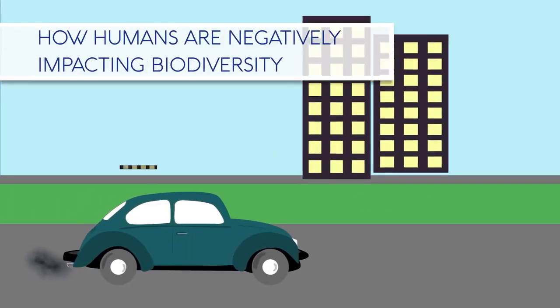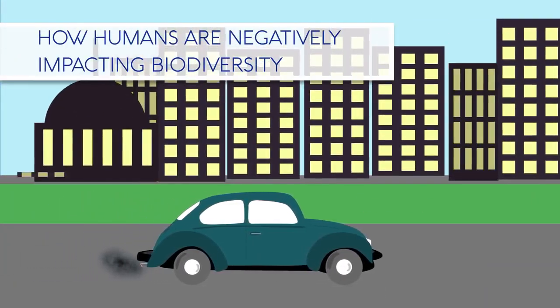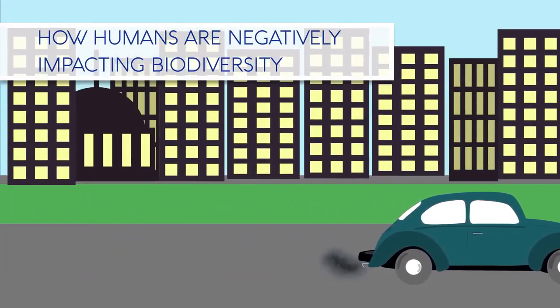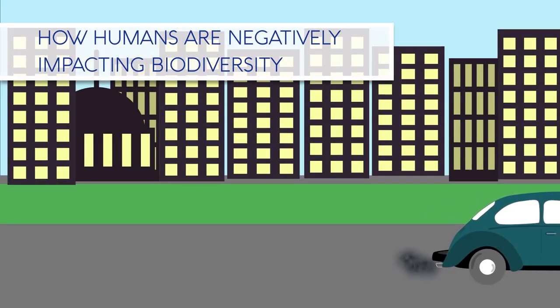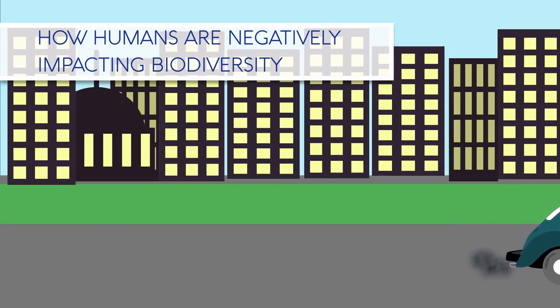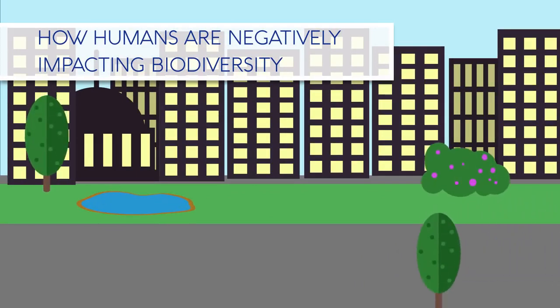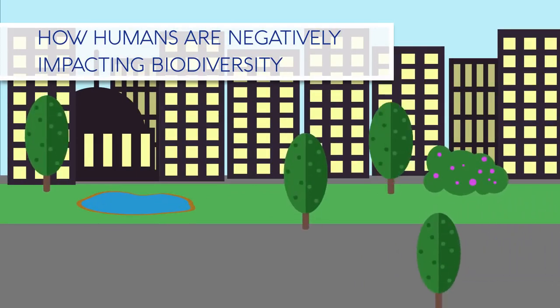Human activities are reducing biodiversity. Our future depends upon maintaining a good level of biodiversity, and so we need to start taking measures to try and stop the reduction. In this video, we are going to look at how humans are negatively impacting biodiversity.